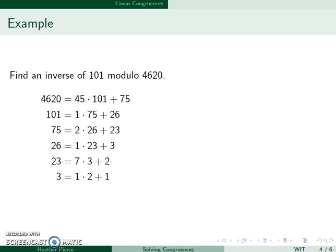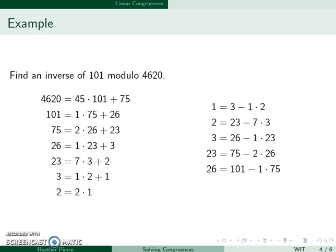We will now solve for the remainders. I'll start with the bottom. 3 is equal to 1 times 2 plus 1, so 1 is equal to 3 minus 1 times 2. The next one up: 2 is equal to 23 minus 7 times 3. 3 is equal to 26 minus 1 times 23. 23 is equal to 75 minus 2 times 26. 26 is 101 minus 1 times 75. And 75 is 4620 minus 45 times 101.